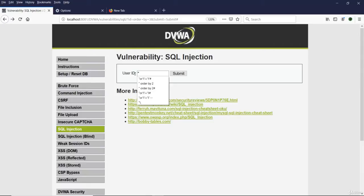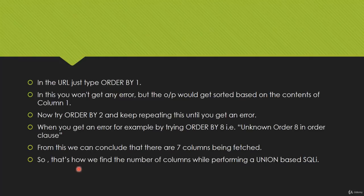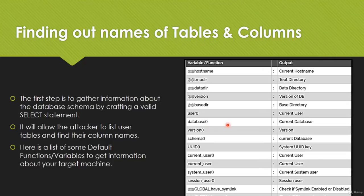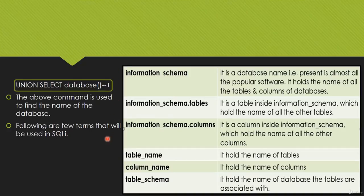Sometimes we need an inverted comma and sometimes a hash, depending on what error the website gives. Now that we know the number of columns, we can apply the UNION-based command. The next step is to find the database schema by crafting a valid SELECT statement, which lets the attacker list users, tables, and column names. Here is a list of predefined variables and functions used in SQL injection — for example, SELECT database() shows the current database name, and SELECT user() shows the current user.